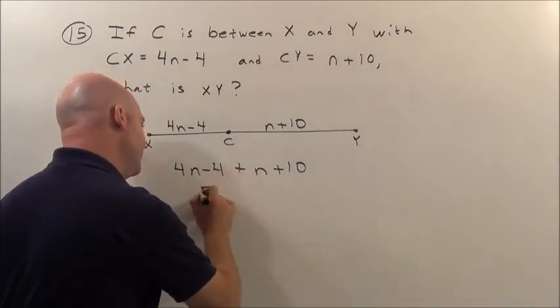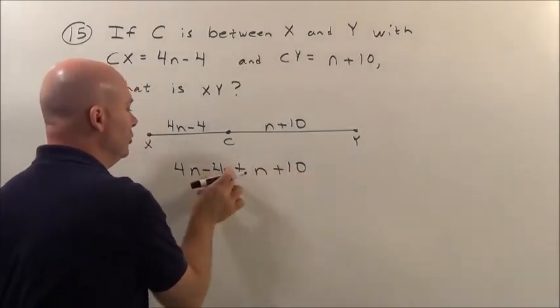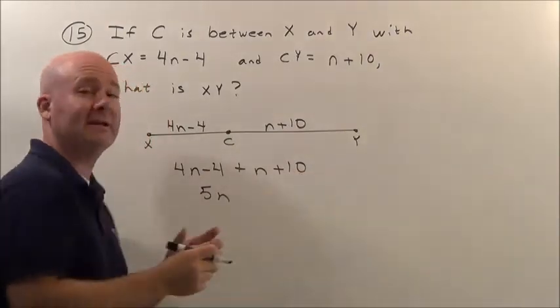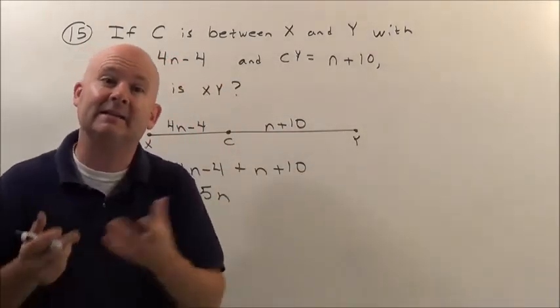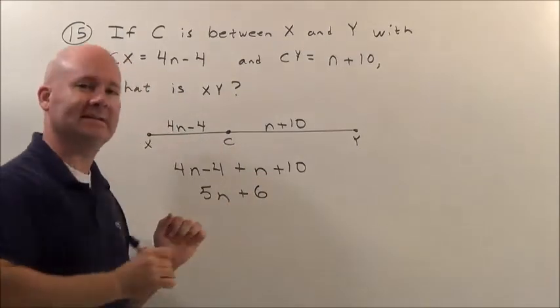4n plus an n, 5n. Negative 4, gain 10. Lose 4 dollars, gain 10. One day I lost 4, the next day I gain 10. Overall, gain 6 dollars.